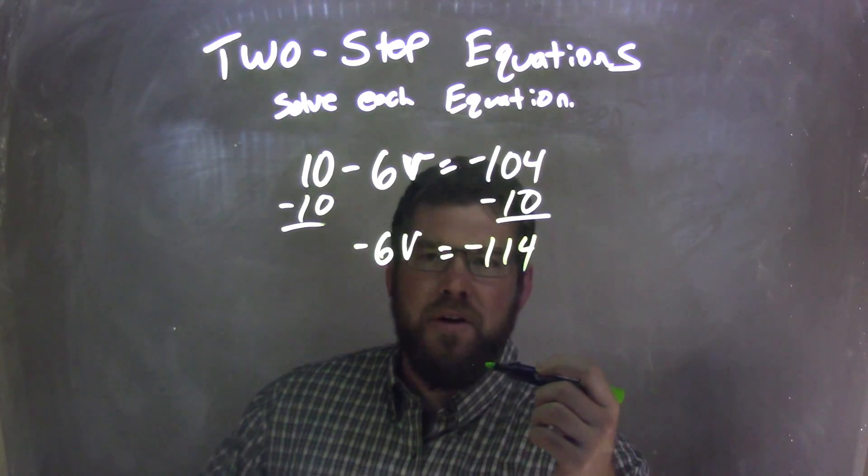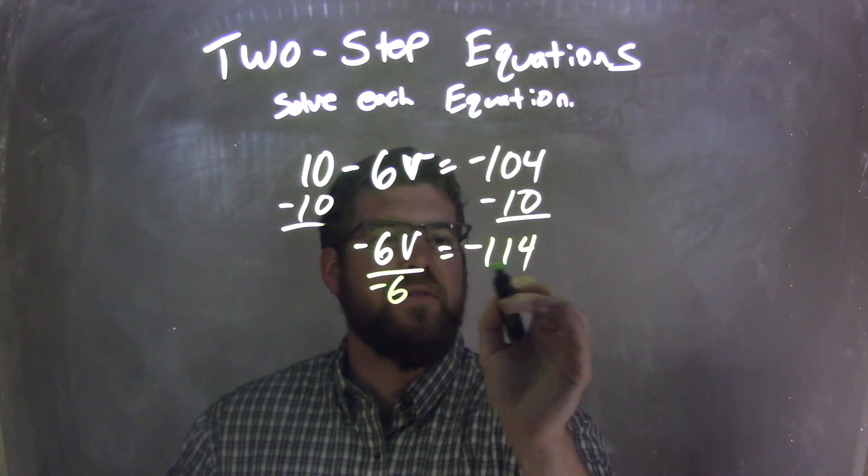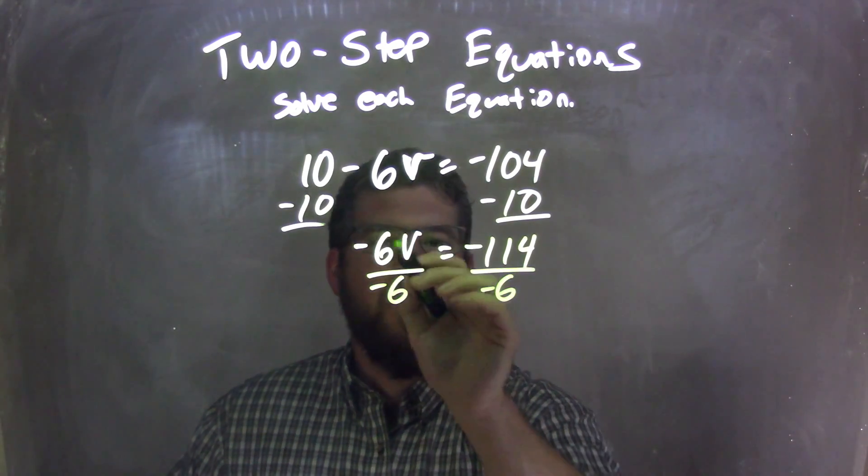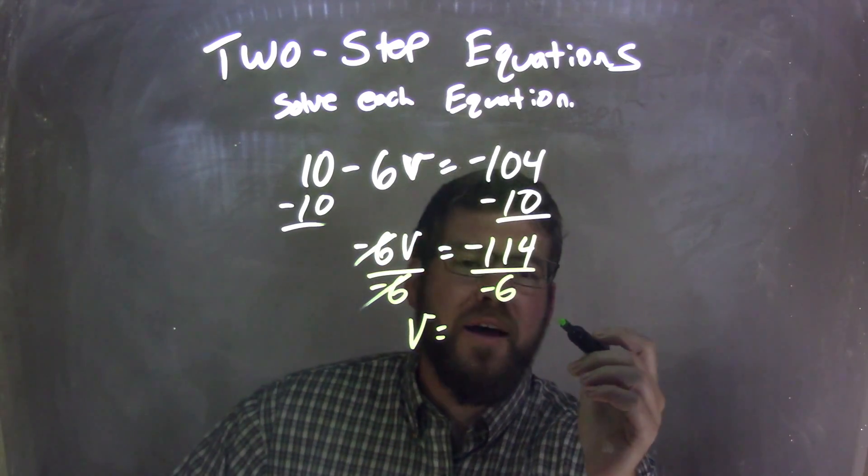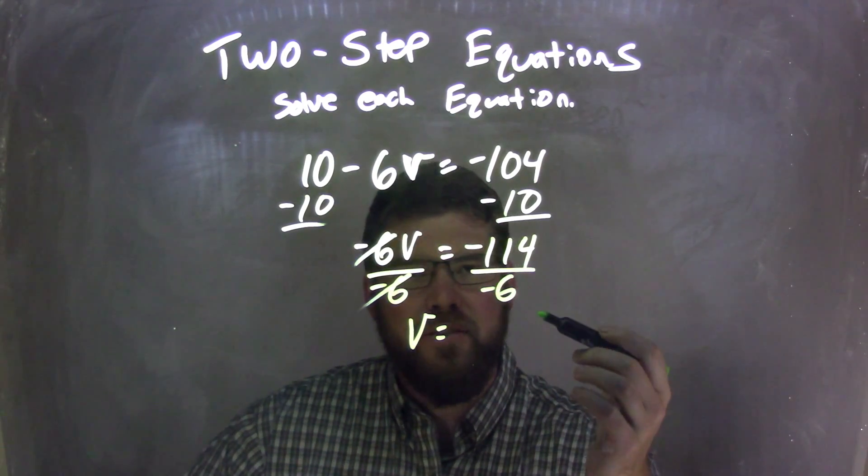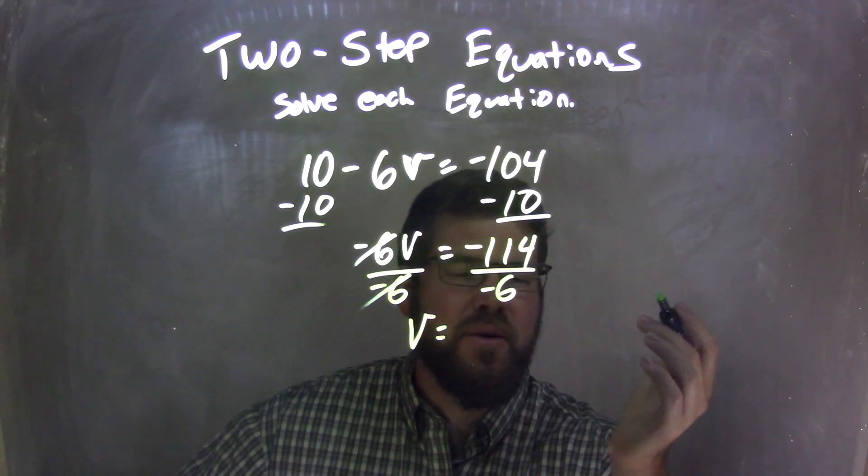So then my next step here is, I see a negative 6 times V. I need to divide that negative 6 to both sides. If the negative 6 is canceled, we're left with V on the left, but on the right, we have negative 114 divided by negative 6. A negative divided by negative is a positive, so I know that. But how many times does 6 go into 114?